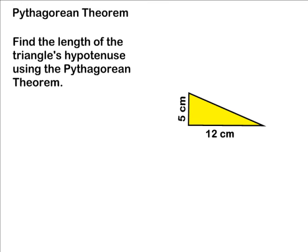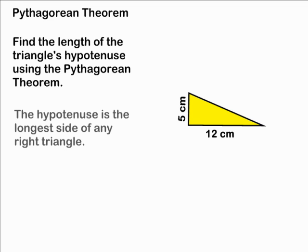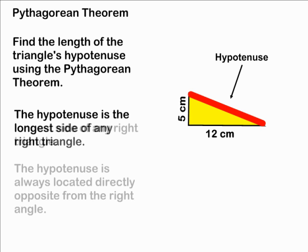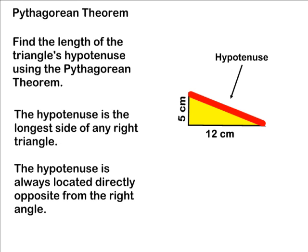In this problem, we have to figure out what the length of this right triangle's hypotenuse is by using the Pythagorean Theorem. The hypotenuse is the longest side of any right triangle. The hypotenuse is always located directly opposite from the right angle of our right triangle.